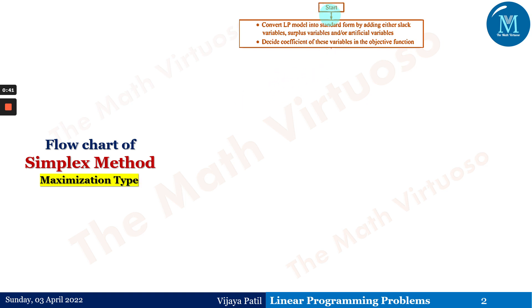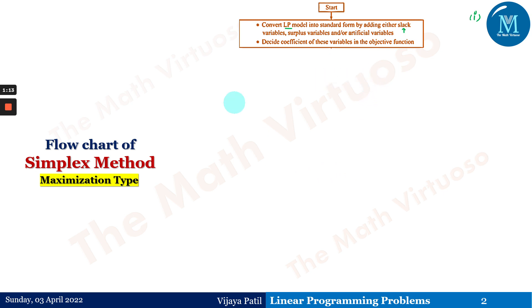For the flowchart of the simplex method of the maximization type, first of all we have to convert the linear programming model into a standard form by adding either slack, surplus, or artificial variables. My suggestion is to follow the introduction session of the simplex method so that you will understand what exactly slack, surplus, and artificial variables mean, and the different terminologies used in maximization, minimization, or the simplex method.